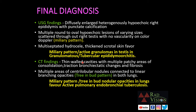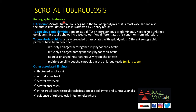This case is presented as a great masquerader because tuberculosis masks or mimics many common differential diagnoses. Regarding scrotal tuberculosis: ultrasound is the primary modality used. Scrotal TB begins in the tail of the epididymis — the most vascular part — and also in the ductus deferens affected by urinary reflux. It presents as either epididymitis or orchitis. In orchitis, four patterns are seen: diffusely enlarged heterogeneously hypoechoic testis; diffusely enlarged homogeneously hypoechoic testis; nodular enlarged heterogeneously hypoechoic testis; or multiple small hypoechoic nodules in an enlarged testis — the miliary pattern seen in this case.